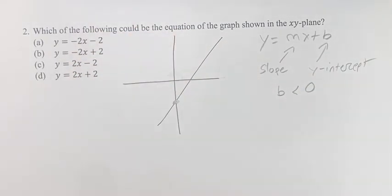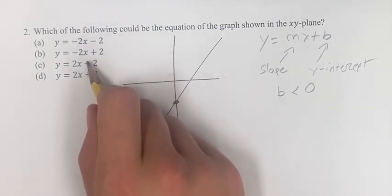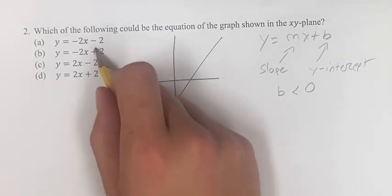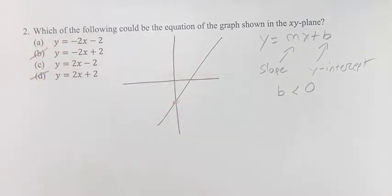So what does that mean for our four answers? Well, it means it could be either this one or this one because we have negative two for b. Those are both less than zero. These two have positive two, that's greater than zero. So it can't be b, it can't be d. So it's either a or c.